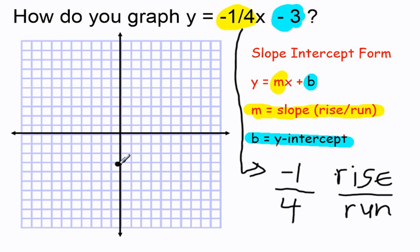So starting from my y-intercept, to get a new point, I can go down one and over one, two, three, four. And I get a new point.